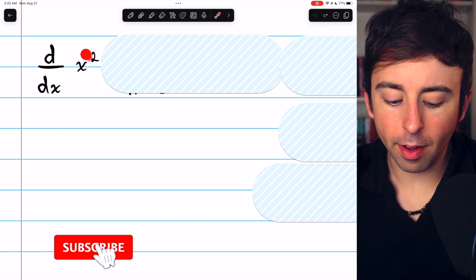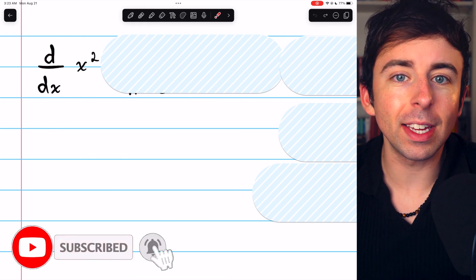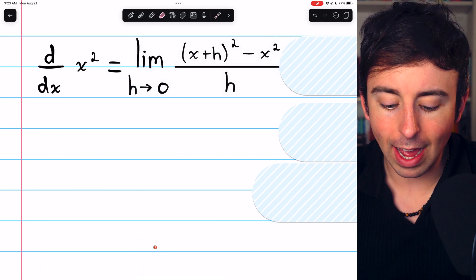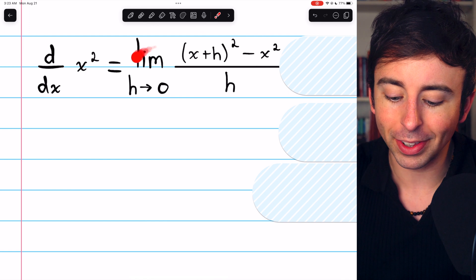Let's find the derivative of x squared using the limit definition. The first step, of course, is to apply the limit definition and to write the resulting limit.